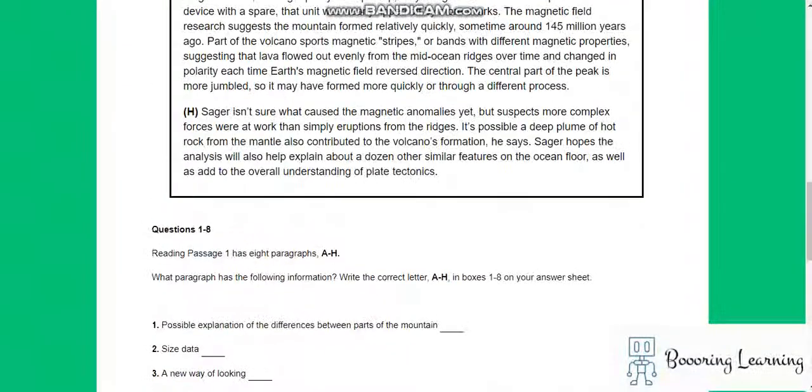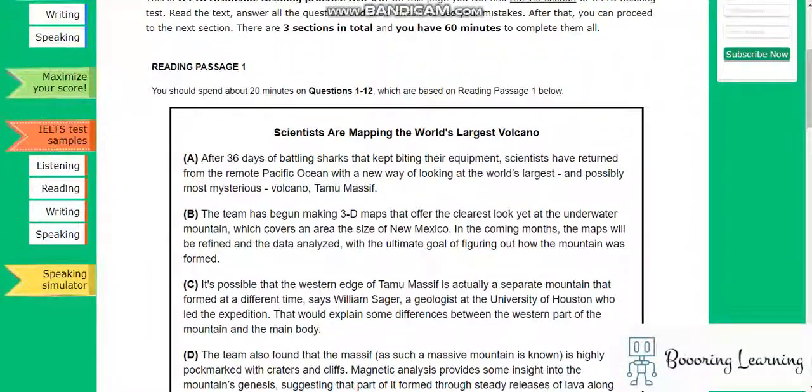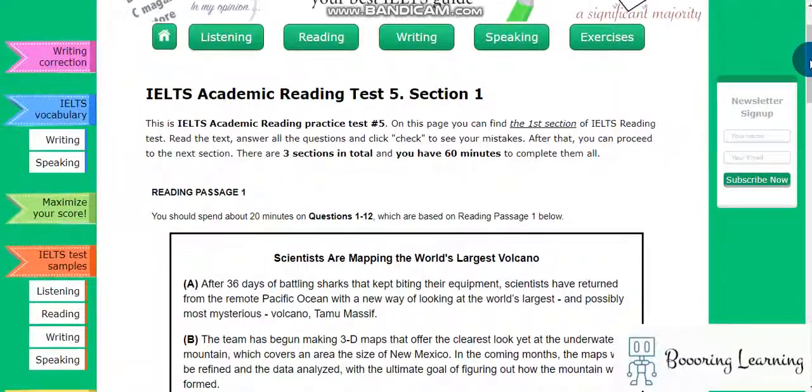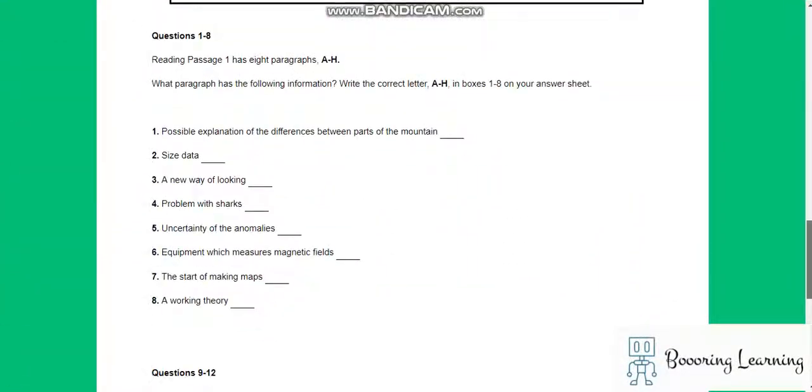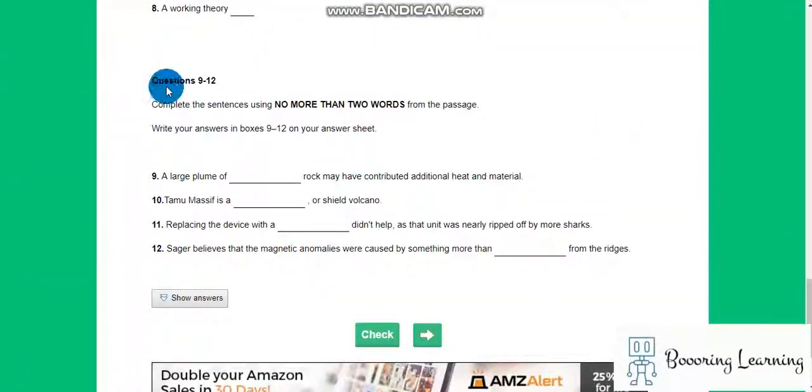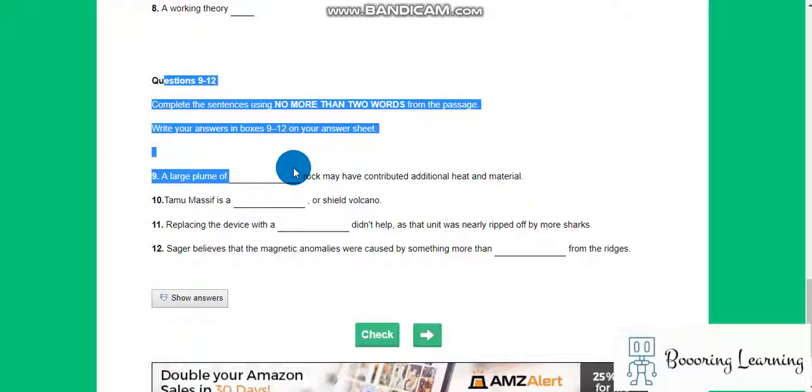Hi, hello, it is Alice. Academic reading passage test 5, section 1, part 2. So we will answer questions between 9 to 12. You can watch my previous video to read the text more.